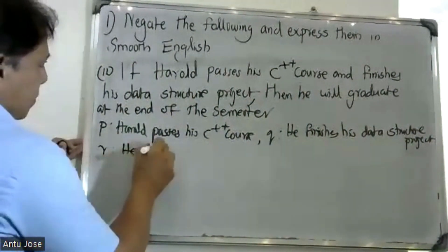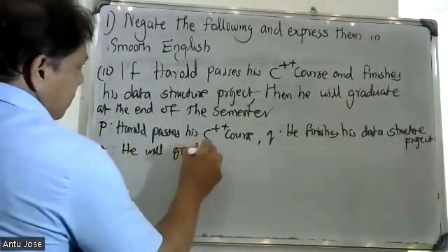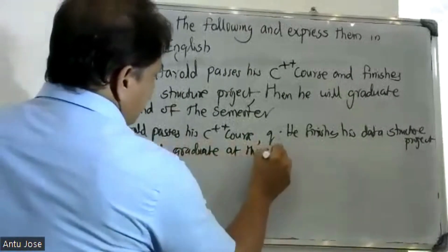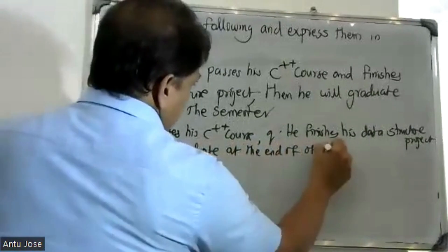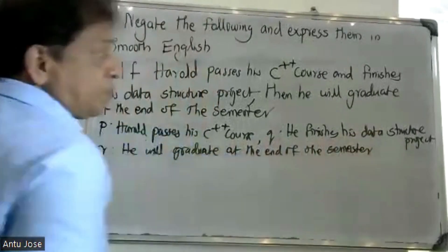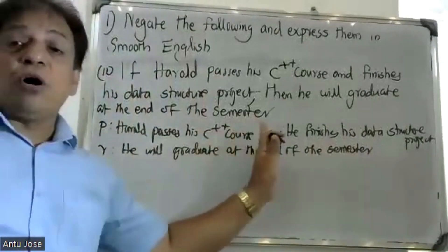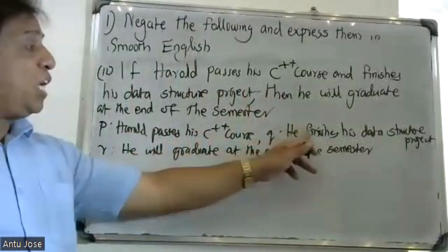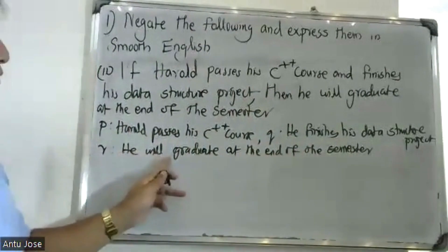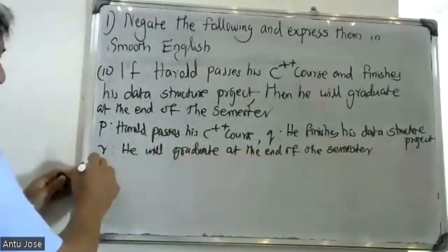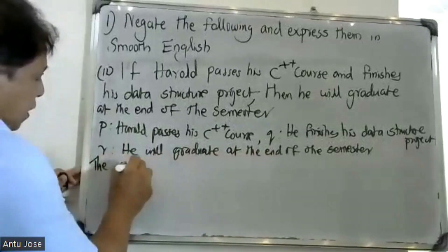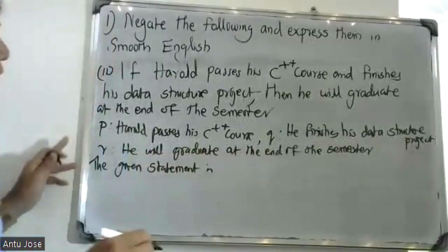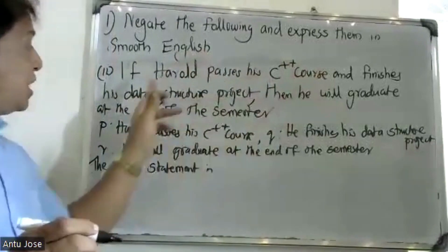Along with various sources, he finishes his data structure and did graduate at the end of the semester. Therefore, the given statement is: Harold passes his C++ scores and finishes his data structure project, then he will graduate at the end of the semester.